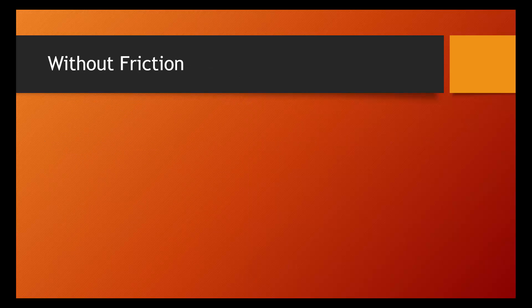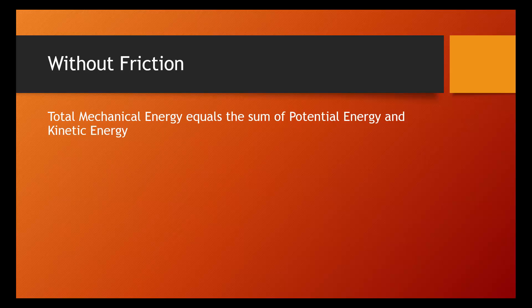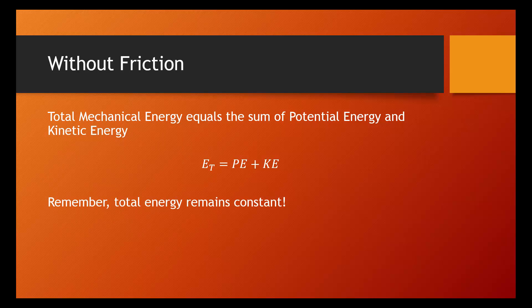First, we'll take a look at conservation of energy without including friction. It'll be a little bit easier this way. So, without friction, we can say that the total mechanical energy of an object equals the sum of the potential energy and the kinetic energy. We can write this as ET equals PE plus KE. And remember, the total energy always remains constant.